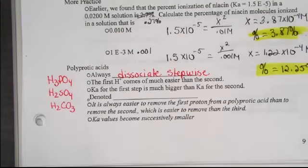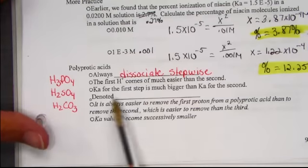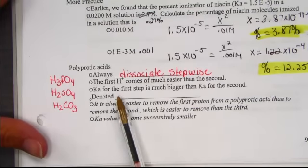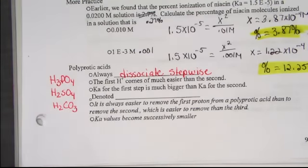Remember in Bronsted-Lowry theory, when we're considering conjugate pairs, they only differ by a single hydrogen ion. We'll move them in a stepwise fashion. We'll notice that the Ka for the first step is always a much larger number than the Ka for the second, which is a larger number than the Ka for the third.